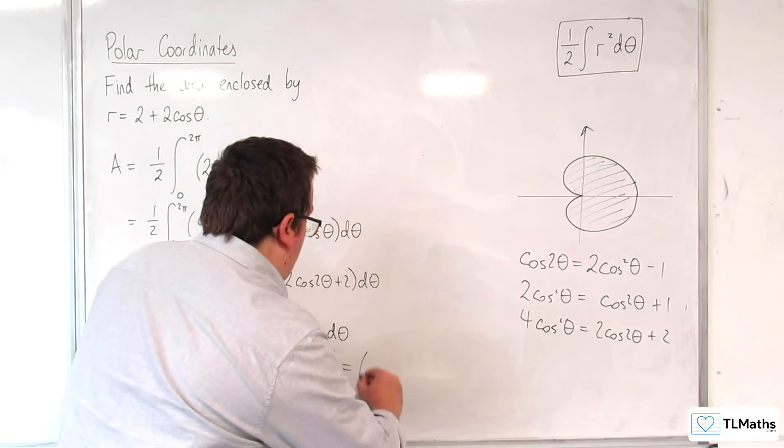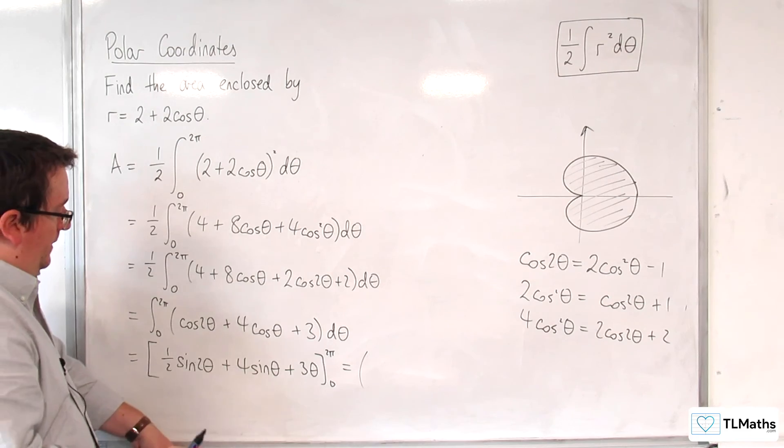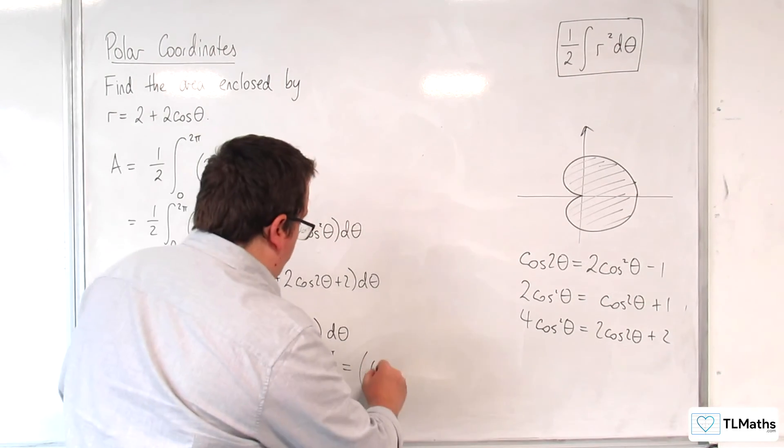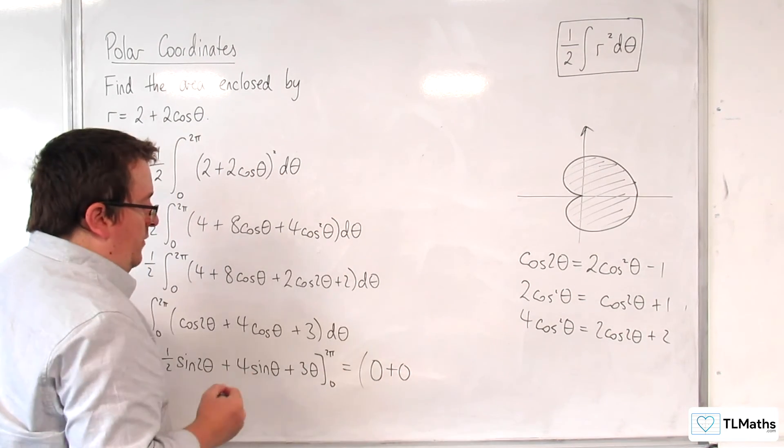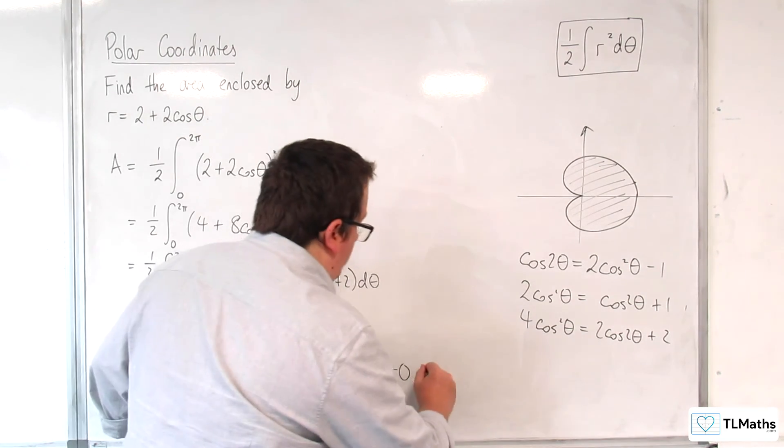So I'm going to substitute in the 2 pi first. Now sine of 4 pi is 0. Sine of 2 pi is 0. 2 pi into 3 theta is 6 pi.